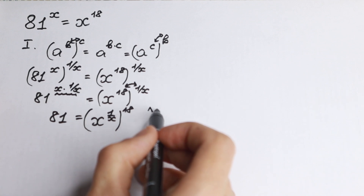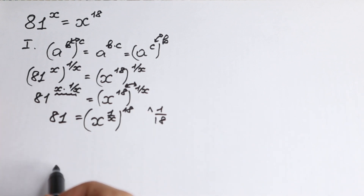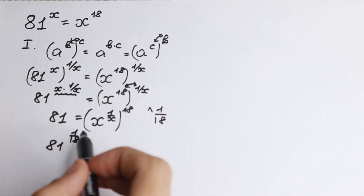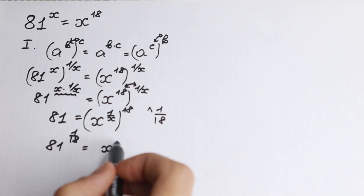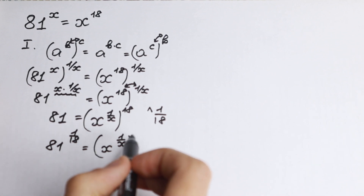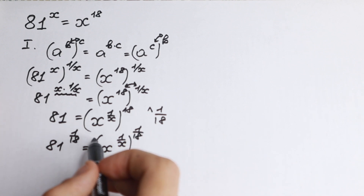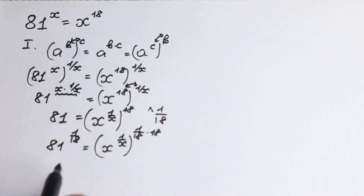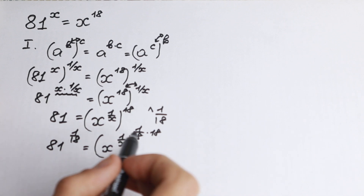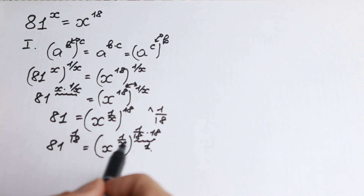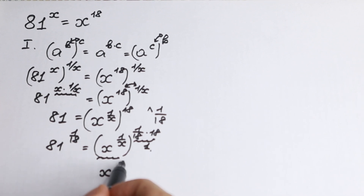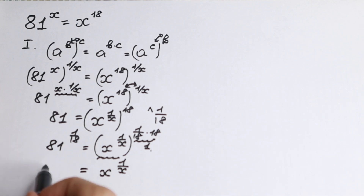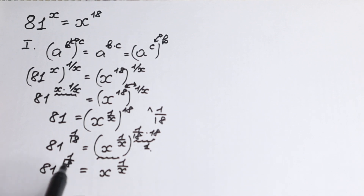Let's raise both sides to the power 1 over 18. On the left hand side we have 81 to the power 1 over 18, and on the right hand side we have x to the power 1 over x, all raised to the power 1 over 18. Multiplying the exponents on the right gives 1, so the right hand side simplifies to x to the power 1 over x. On the left hand side we have 81 to the power 1 over 18. We've now separated x on the right and the constant on the left.